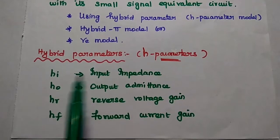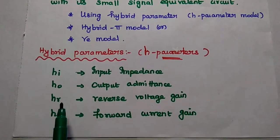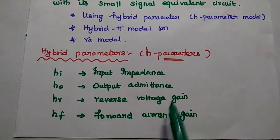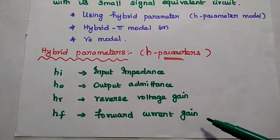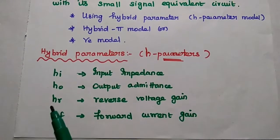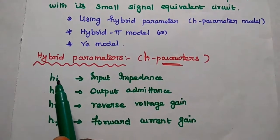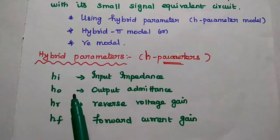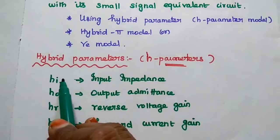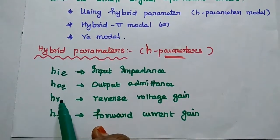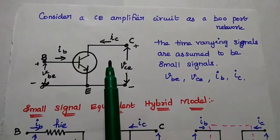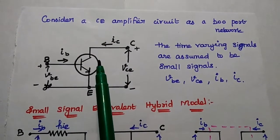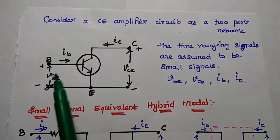Here we can use one more suffix to represent which type of configuration is present in the circuit. For example, in CE configuration, we can mention that value as H_IE. The second suffix represents the type of configuration. Next, we are going to draw the small signal equivalent circuit for a simple CE amplifier circuit.